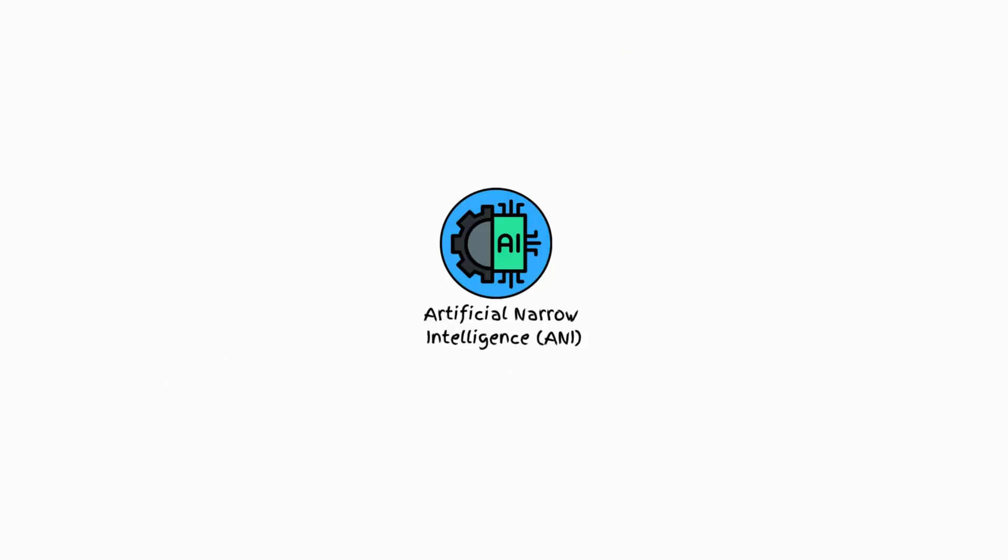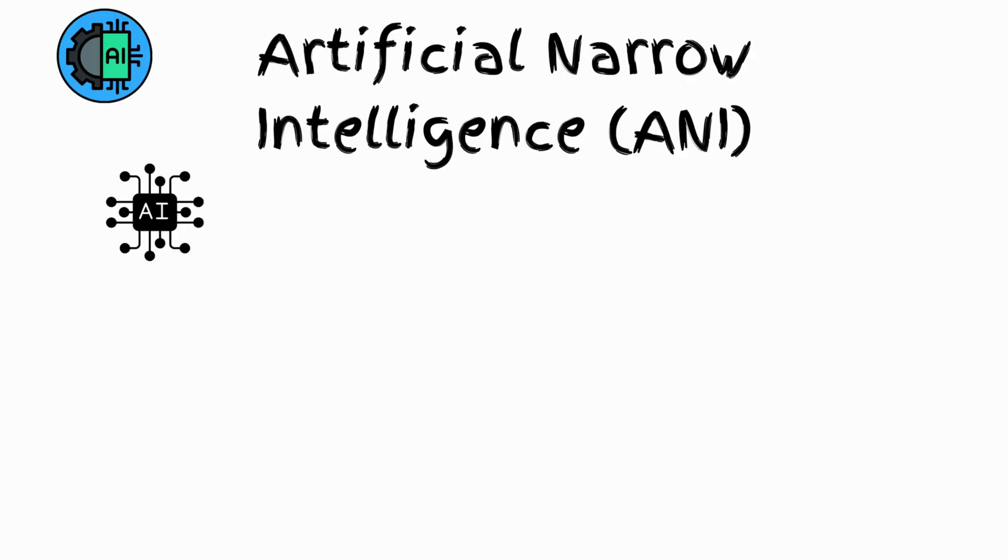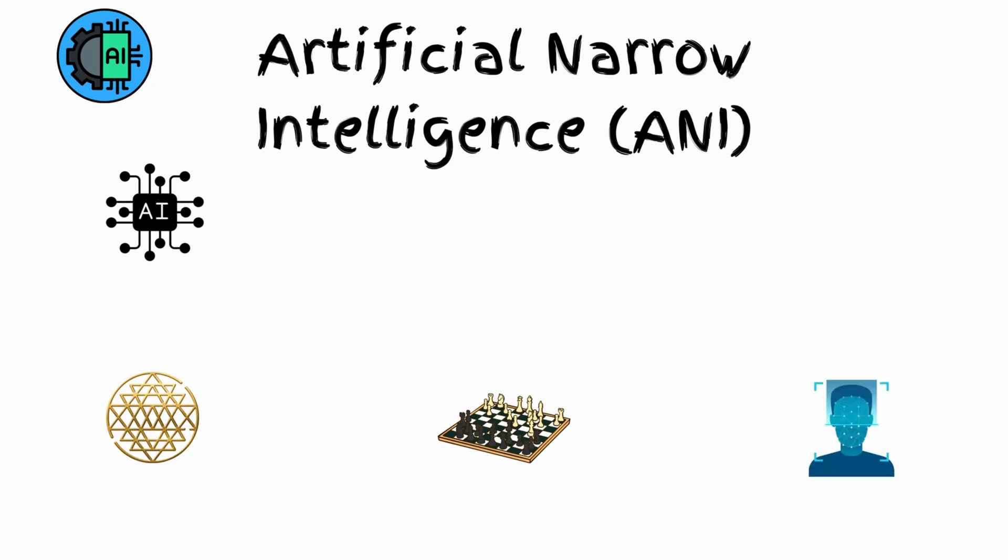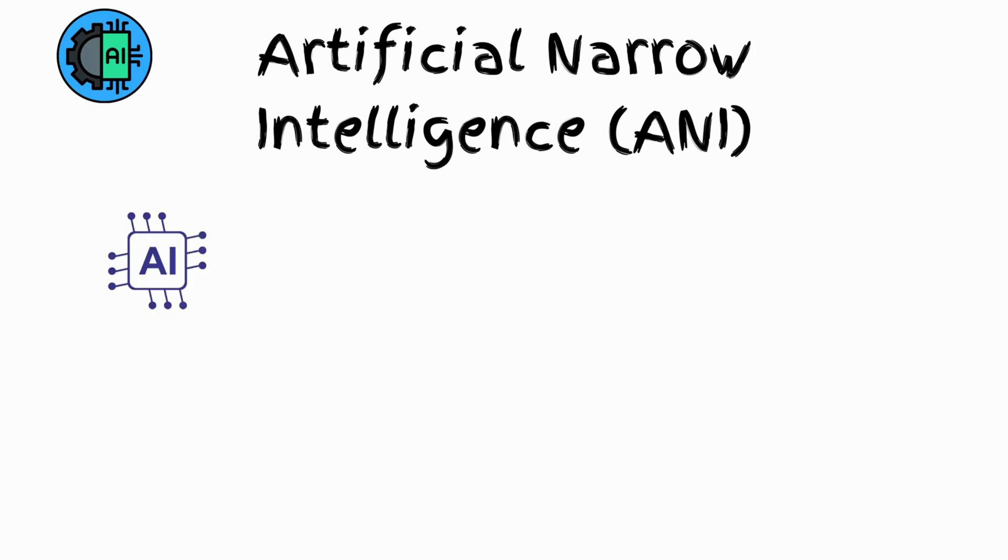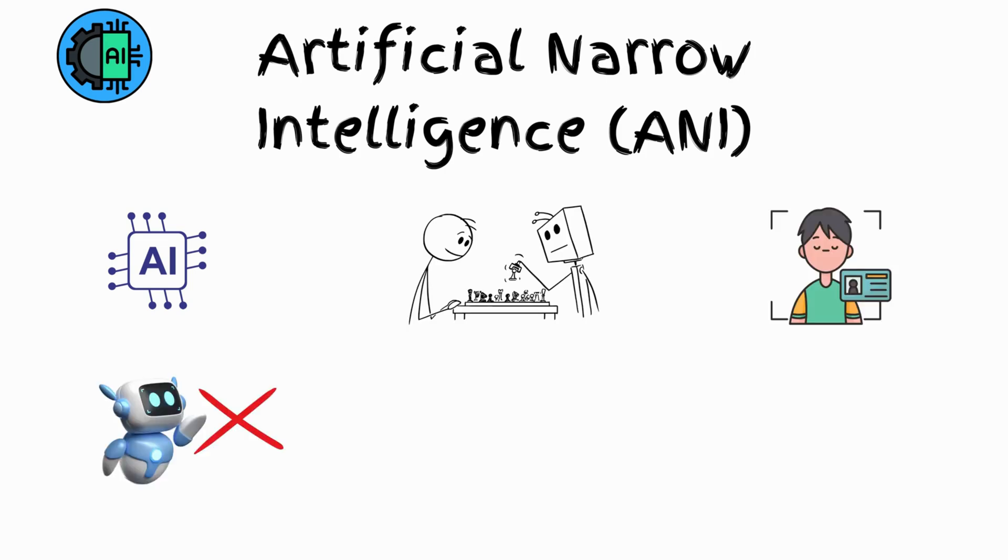Artificial narrow intelligence, ANI. This type of AI is designed for specific tasks, like Siri, chess-playing computers, or facial recognition. AI excels at one thing, like beating humans at chess or identifying faces in photos, but can't reason or think beyond its specific purpose.